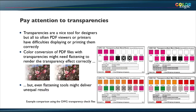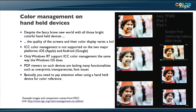What really frustrates me is handheld devices. We heard that about 60% of US people have a tablet today — let's say it's a large number. People are used to viewing PDF files on screen. However, the two major platforms — iOS from Apple and Android — do not support ICC color management; only Windows RT does. That's a big problem. These devices are also very bright and tuned to have nice colors.